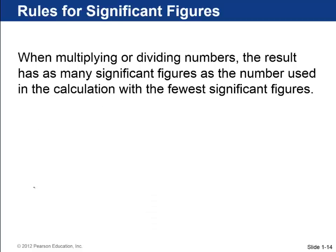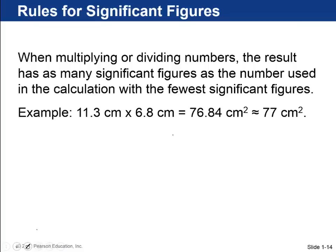The rules for significant figures is if you're multiplying or dividing two numbers, the result should be rounded to the same number of significant figures as the number used in the calculation with the fewest significant figures. So for example, 11.3 centimeters times 6.8 centimeters. If you do that in your calculator, you'll get 76.84 centimeters squared. But 11.3 has three significant figures and 6.8 has two. So the fewest is coming from the 6.8. So you should round, if this is your final area, you should round it to 77 square centimeters to match with the 6.8.